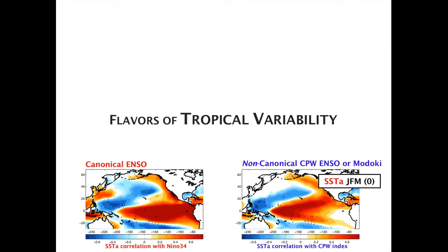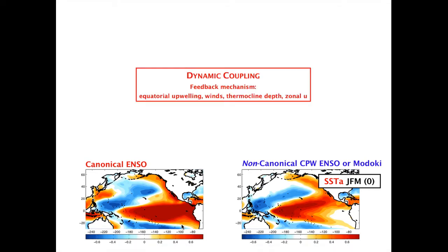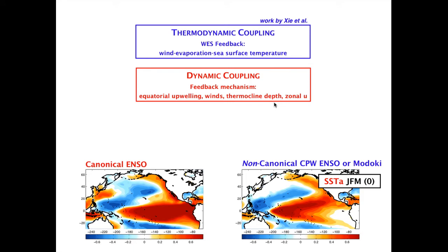Going back to the flavors of tropical variability — the two types of Eastern Pacific and Central Pacific ENSO, which are clearly evident by taking correlations of their corresponding indices with sea surface temperatures — there are important feedback dynamics that lead to the growth of these anomalies in the tropics. One involves a dynamic coupling with the ocean: equatorial upwelling, winds, thermocline depth, and zonal current. In the tropical basin there is also a thermodynamic coupling referred to as the WES feedback — wind evaporation sea surface temperature — which amplifies SST anomalies in the tropical latitudes.